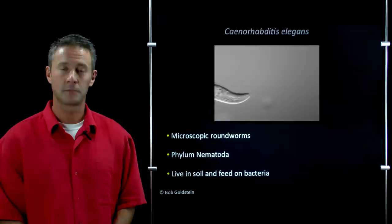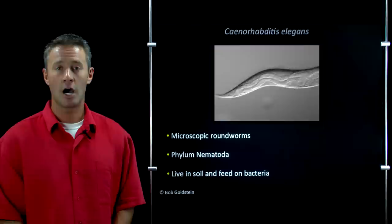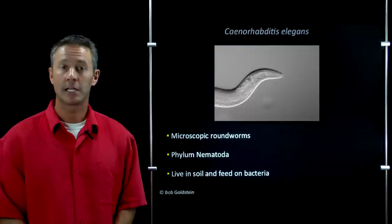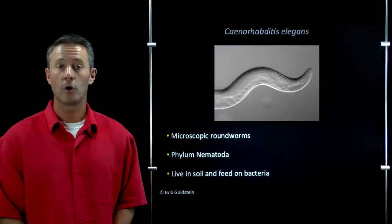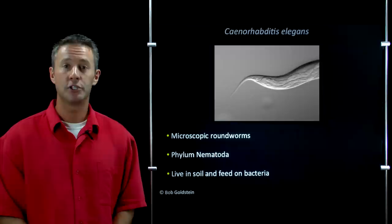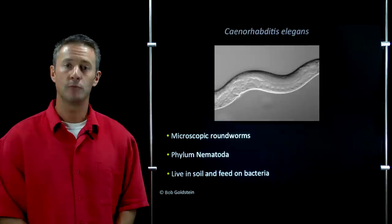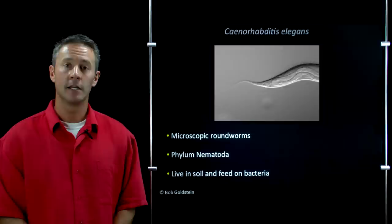Now there are parasitic nematode species, but C. elegans are free living, or non-parasitic. In the wild, they live in the soil where they feed on bacteria that grow on rotting vegetable matter. So if you do any gardening and you have a compost heap, it's very likely that you have lots of C. elegans and related nematode species crawling around in there. You can also grow them very easily in the lab, and under those conditions they make a really great model organism for studying various aspects of both embryonic and post-embryonic development.